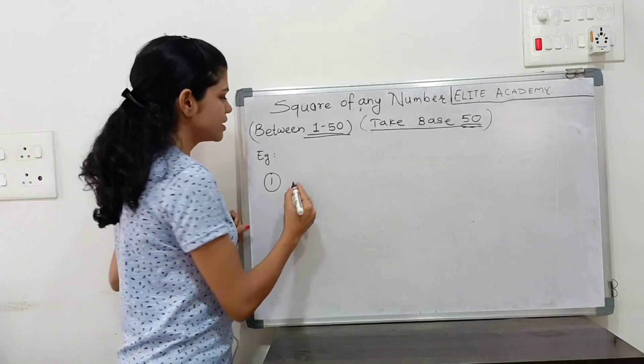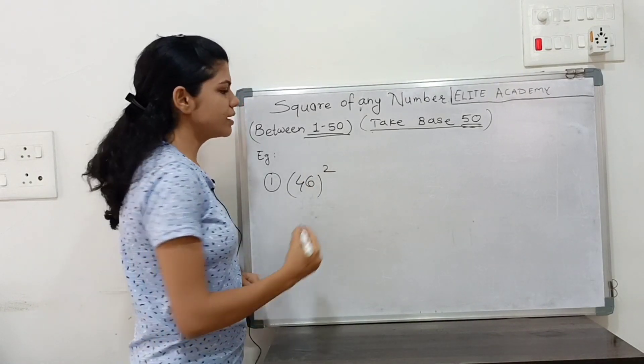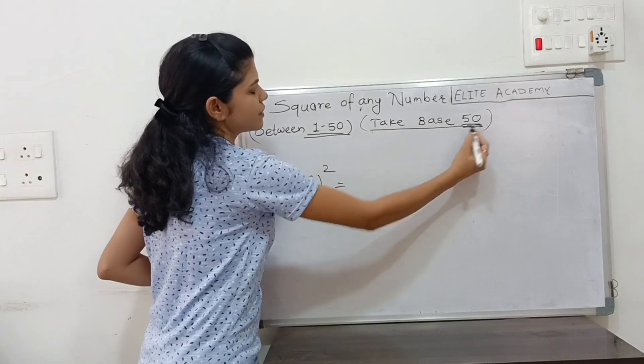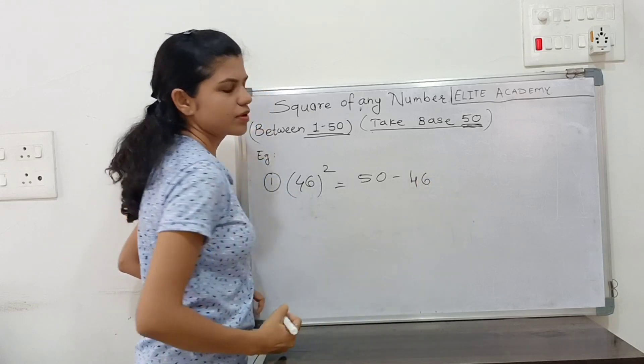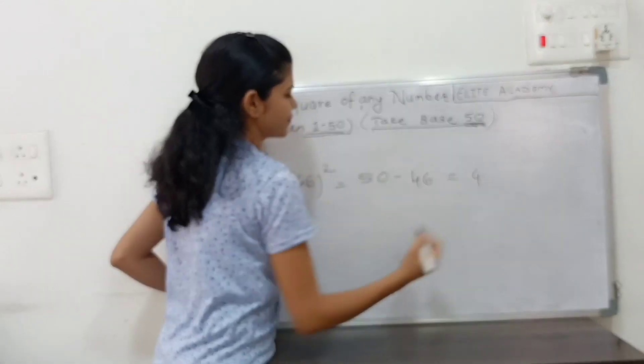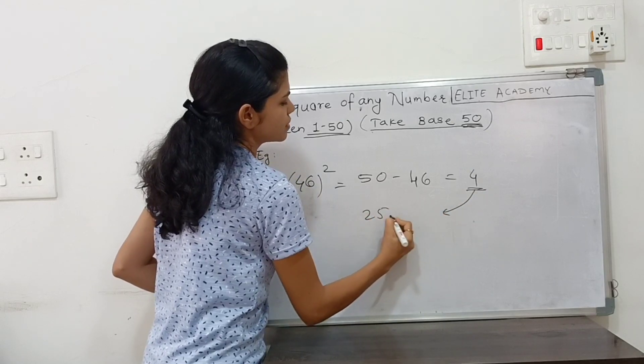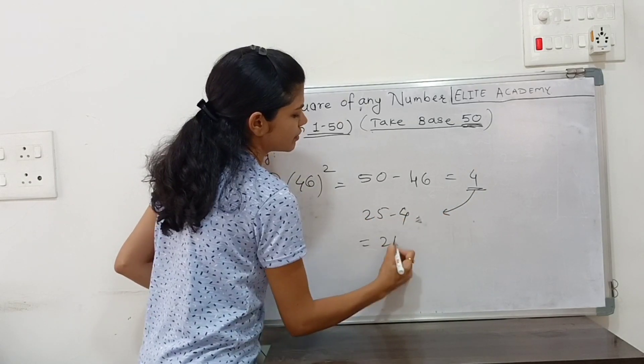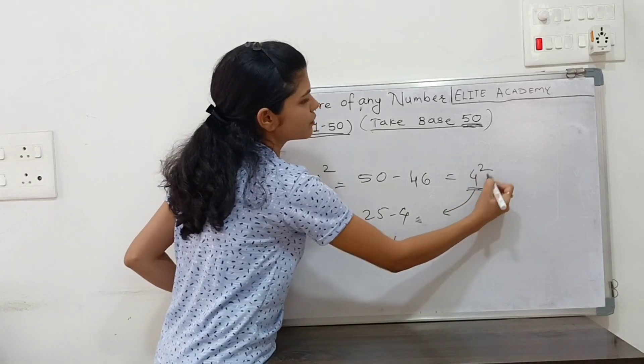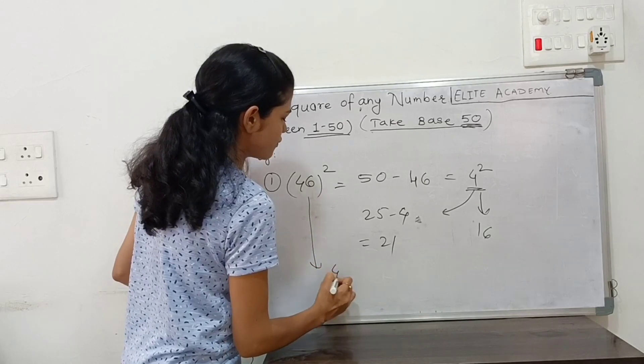Let's take a first example. Suppose we take 46. We have to find the square of this number. The base is 50, so 50 minus 46, answer is 4. Again, 25 minus 4, the answer is 21. Take the square of 4, answer is 16.